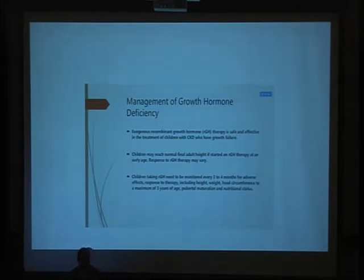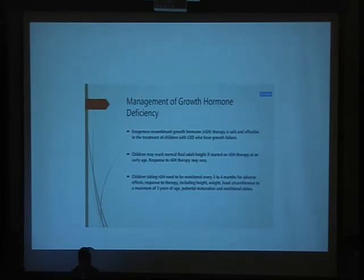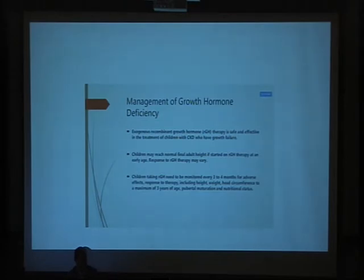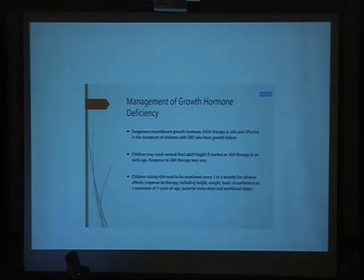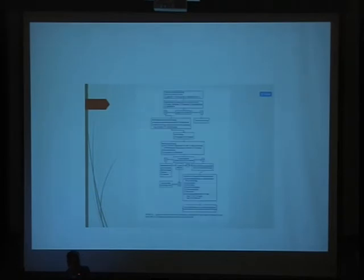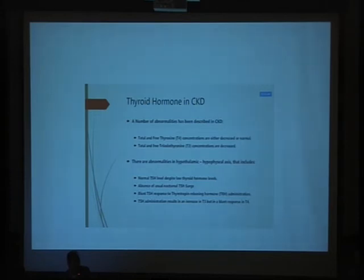A question was raised: if the problem is at the tissue level — meaning growth hormone resistance — then if you give exogenous growth hormone, where would the effects be? The answer: there is resistance to growth hormone at the organ level. So we give a higher dose of growth hormone to overcome this resistance. Even after kidney transplantation, there is some concern about glomerulosclerosis. However, in Western communities, height is considered very crucial, and they consider the benefit worth the risk.